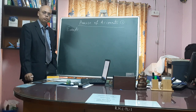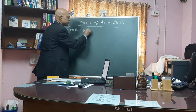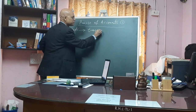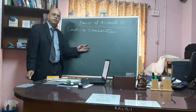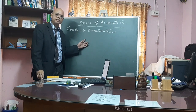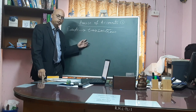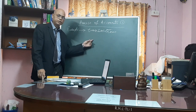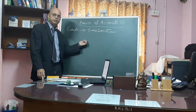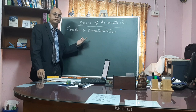The events which can be measured in terms of money are called transactions. It is very clear that the events which can be measured in terms of money are called transactions. Therefore, to be a transaction it must be a monetary event. All events are not transactions, but all transactions are events.